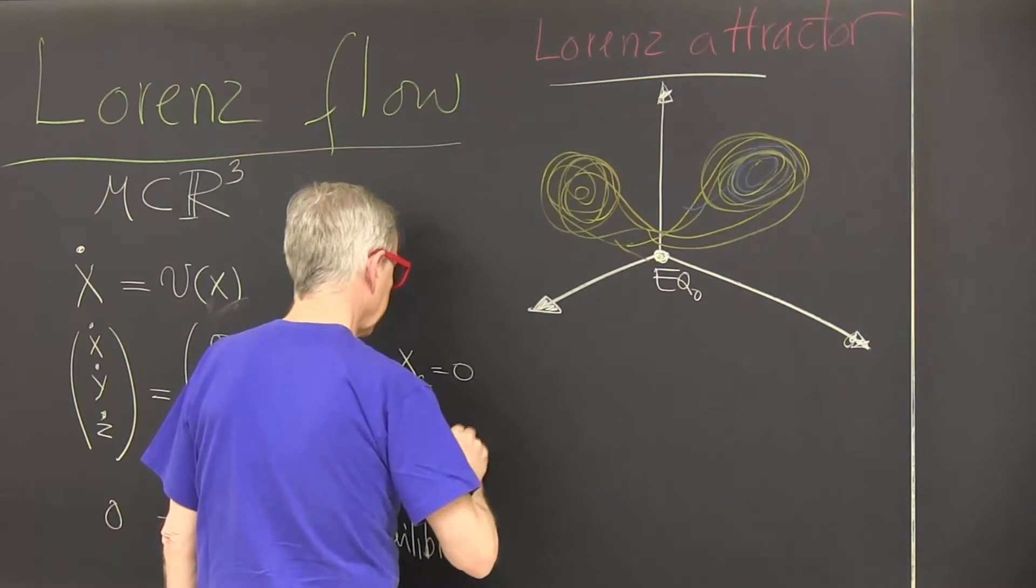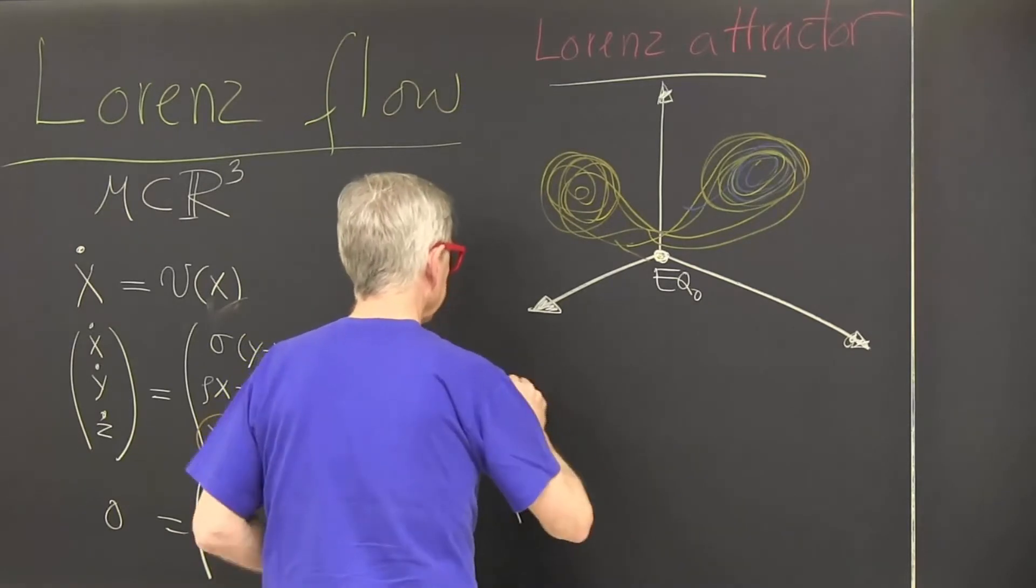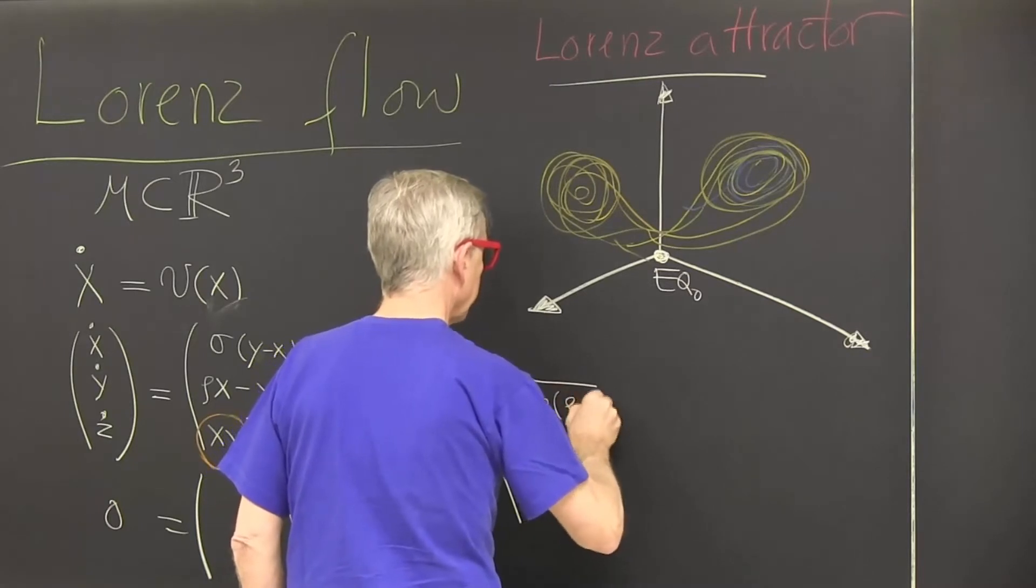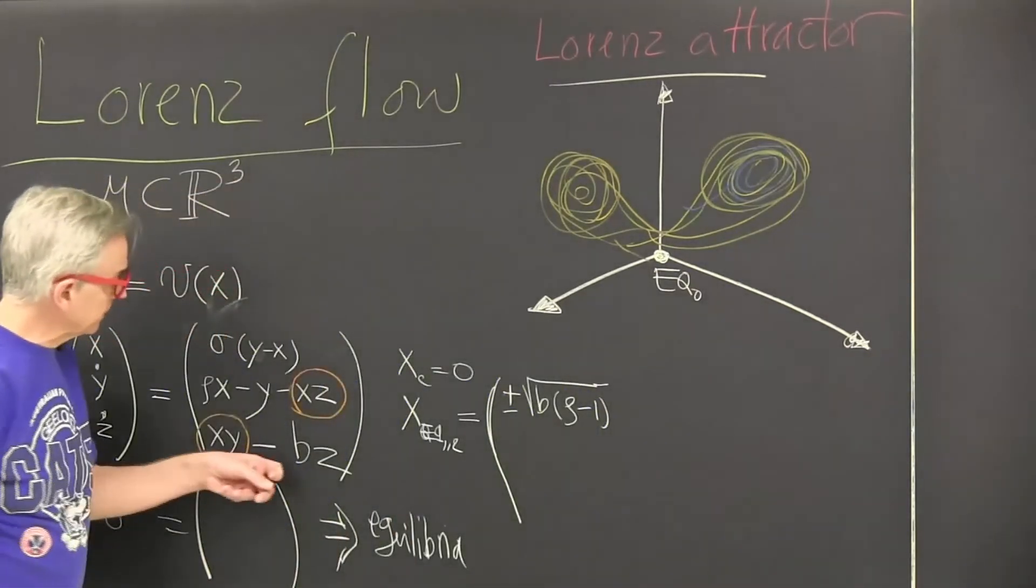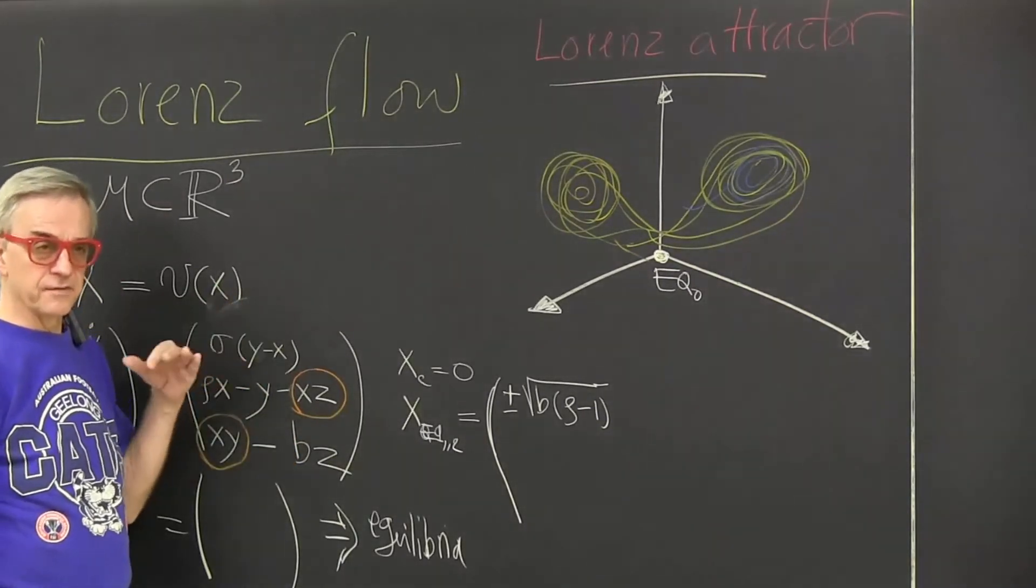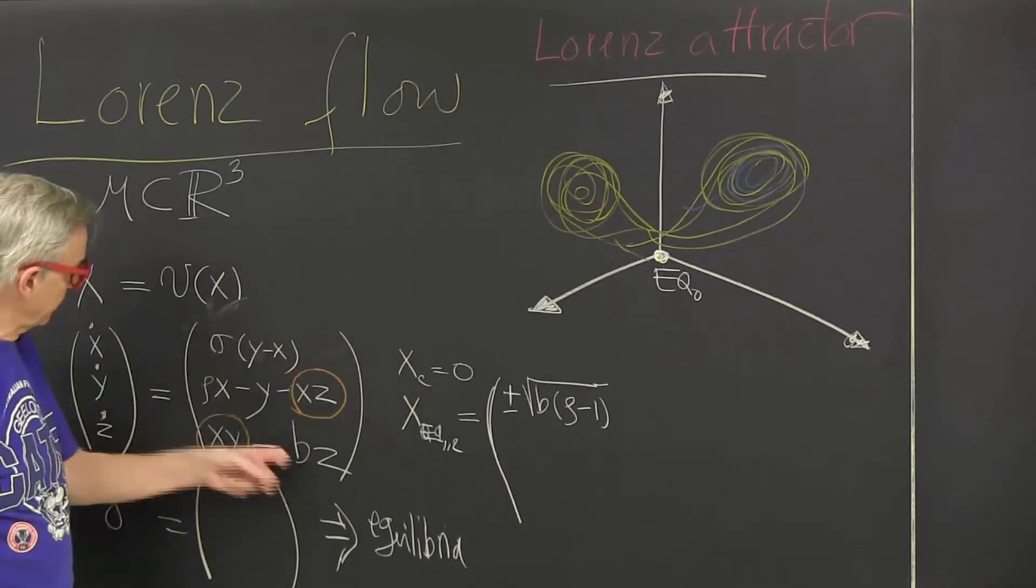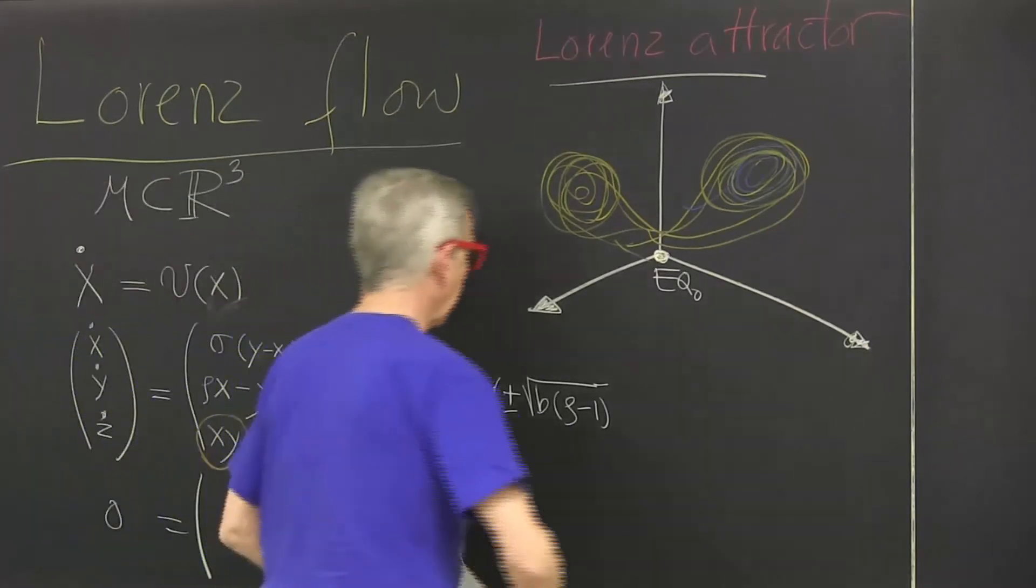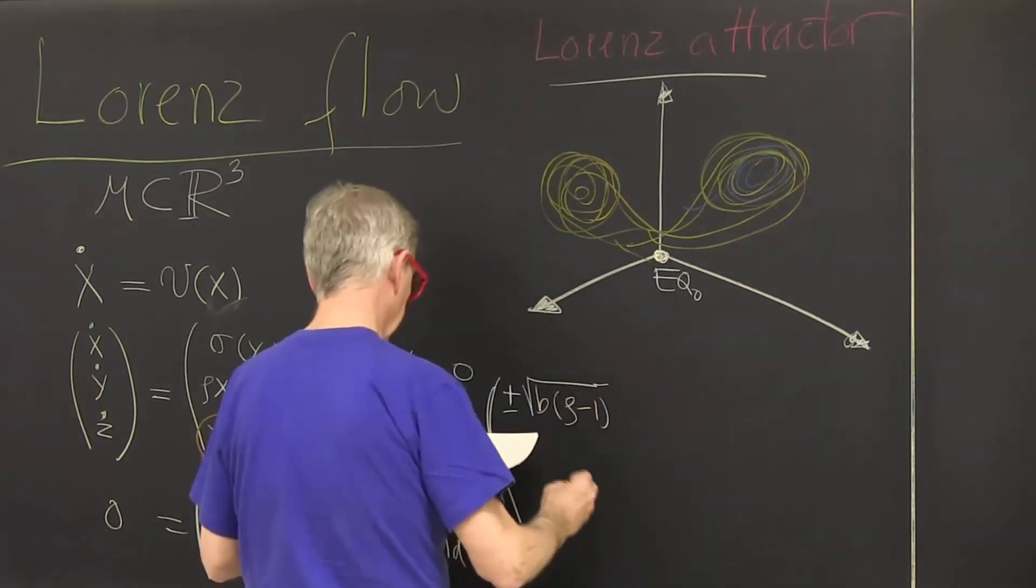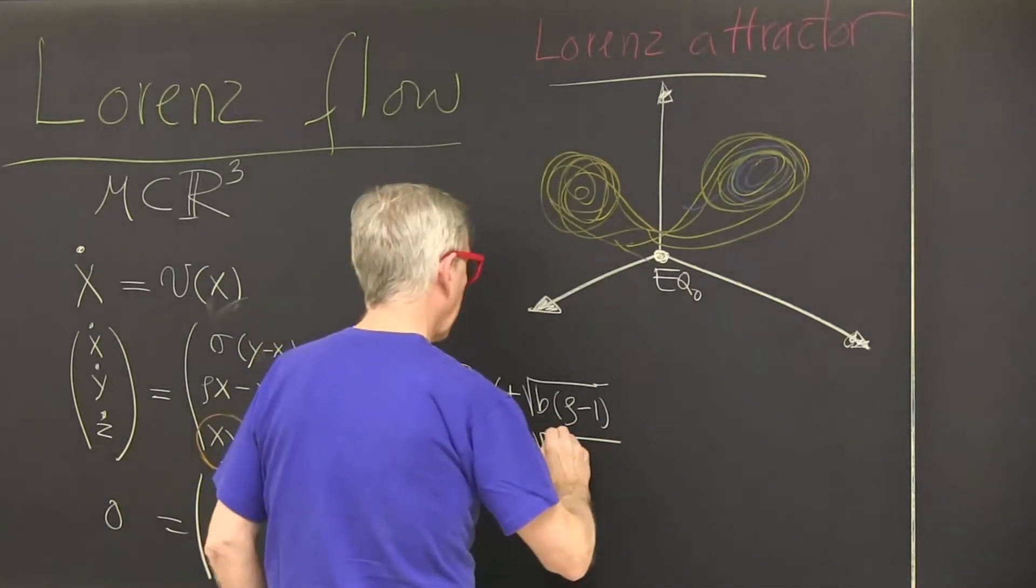You divide your equations by that solution. And then you find there's a quadratic equation you're solving. And the next two equilibria, let's call them one and two. The analytic form is plus minus square root of b times rho minus one. Now this is a parameter that vaguely has something to do with Reynolds number and heating in the original physics. But it's so far away from the original physics that you shouldn't take them too seriously.